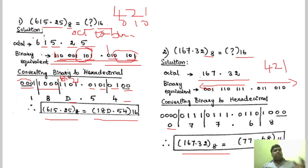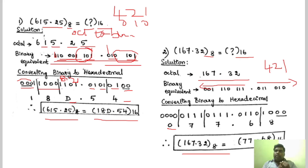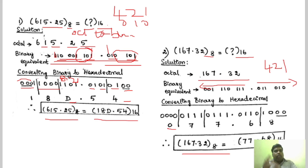Very simple steps. First, you have to convert the octal number to binary. And then the second step is from binary to hexadecimal — you have to group it in 4 bits and then write the equivalent hexadecimal number.